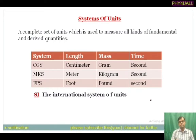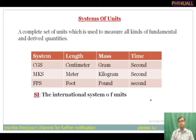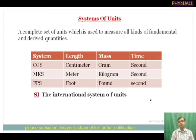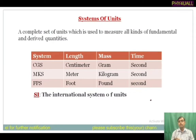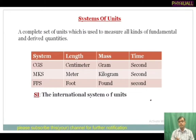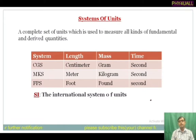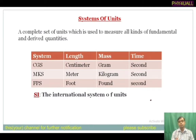There are different types of unit systems. In the CGS system, the unit for length is centimeter, mass is gram, and time is second. In the MKS system, length is in meter, mass is in kilogram, and time is in second. In the FPS system (British system), length is in foot, mass is in pound, and time is second. The internationally accepted unit system, known all over the world, is called the SI unit — the International System of Units.